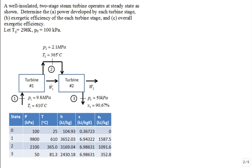We have a well-insulated two-stage steam turbine. Here's the illustration for it. There's the first stage or the first part of the turbine, or I'll just call it turbine one and then turbine two.